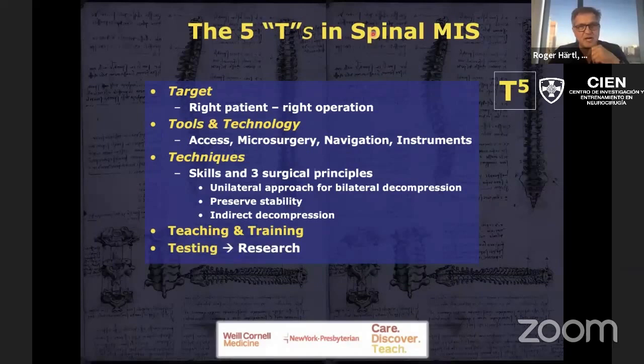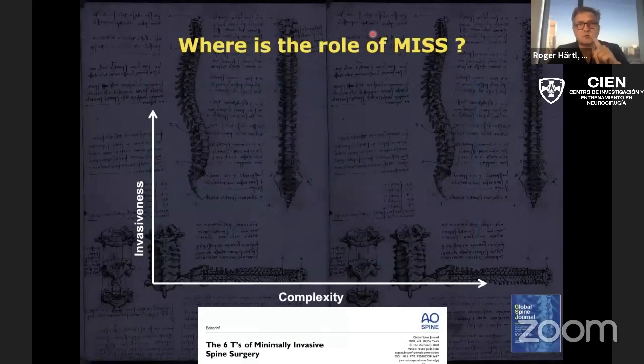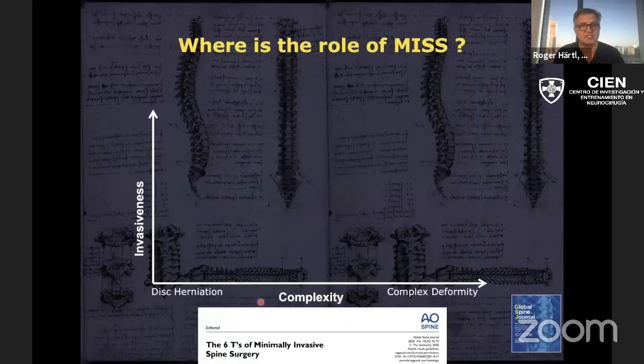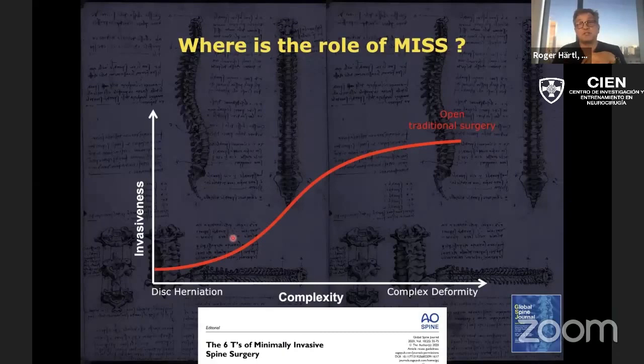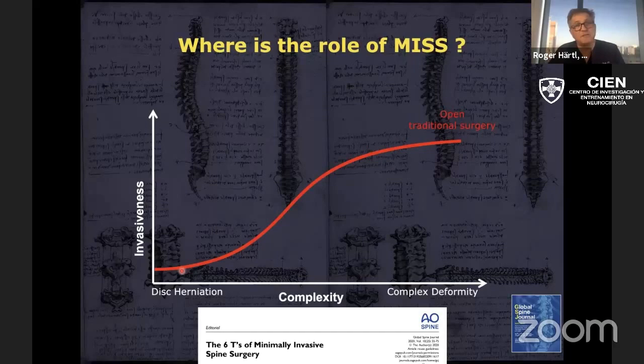We'll also talk a little bit about teaching and training. Where is the role of minimally invasive spinal surgery? If you draw a line plotting complexity on the x-axis — from a simple pathology such as a disc herniation to complex deformity — and plot that against invasiveness, like time for surgery, infection risk, blood loss, you'll see that with open traditional surgery that curve goes up pretty quickly. A simple pathology like a lumbar disc herniation treated with open or minimally invasive surgery won't be that invasive regardless.